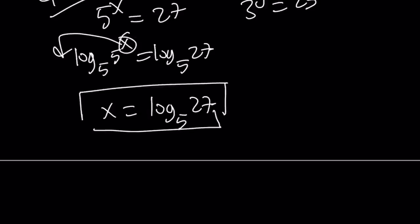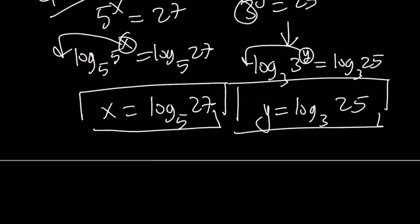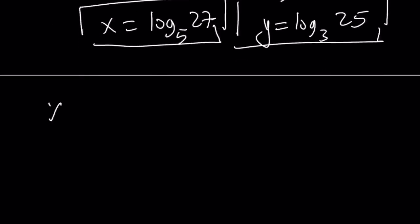So that kind of gives us a nicer value. Instead of a quotient, we can write it as a log of something. From here, we can log both sides with base 3. And because our base is 3, that makes sense. We can go ahead and move the y. Log 3 with base 3 is 1. So that's going to become y equals log 25 with base 3.